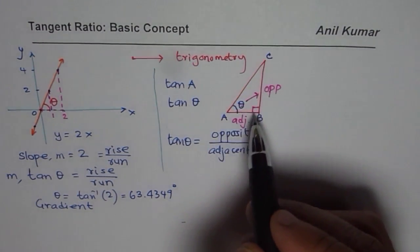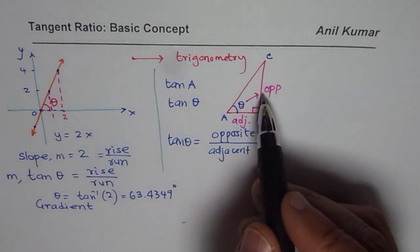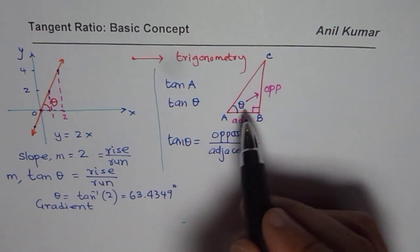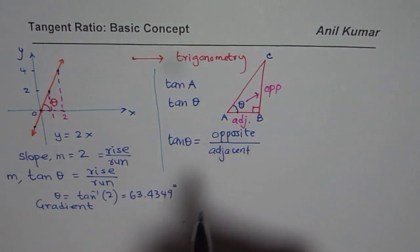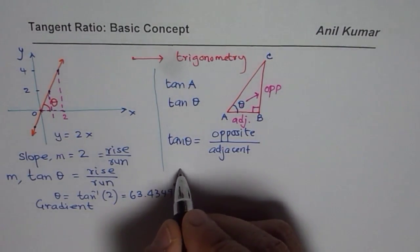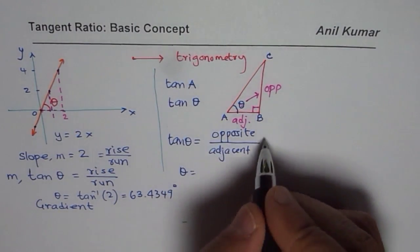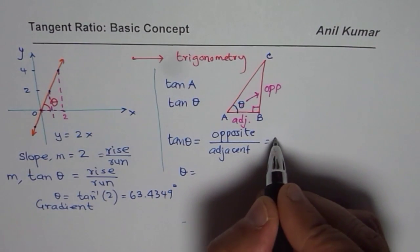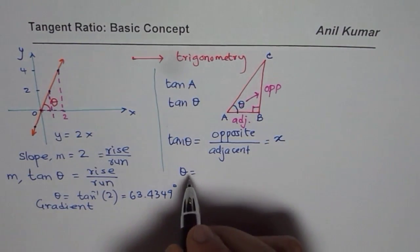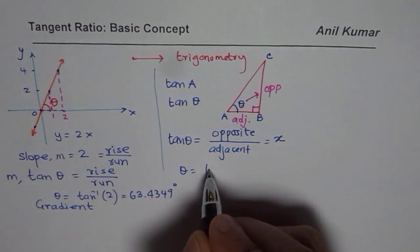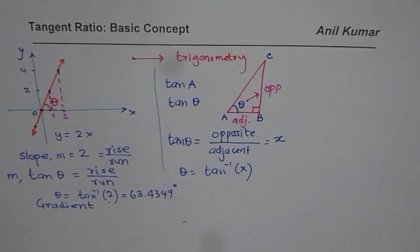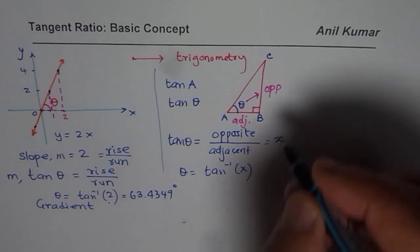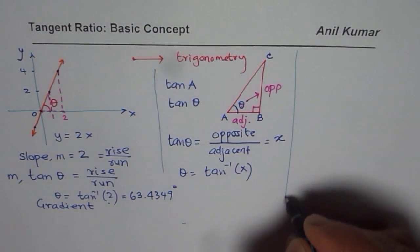So given any right triangle, if we know the sides, then we can find the angle. So that is a very good application of tan theta. And of course, you can find theta by finding, let us say, this ratio is known to us as, let us say, x. In that case, theta is going to be tan inverse of x, correct? Just as we found for the slope of the line. So that is another part, which we will be exploring.